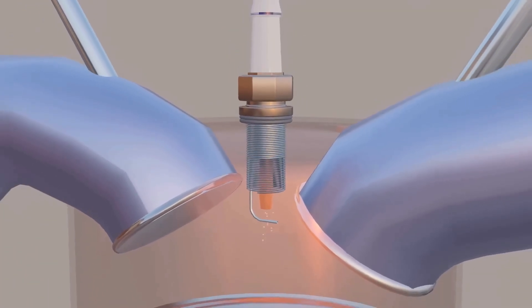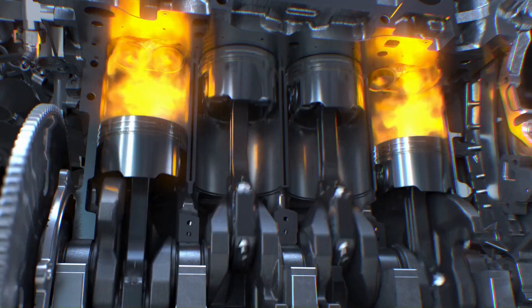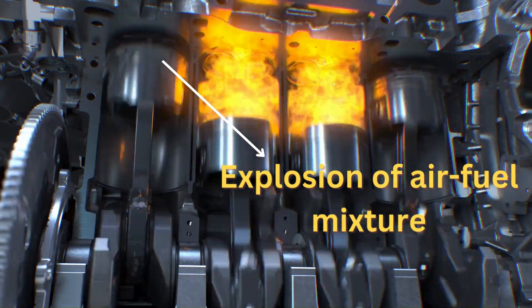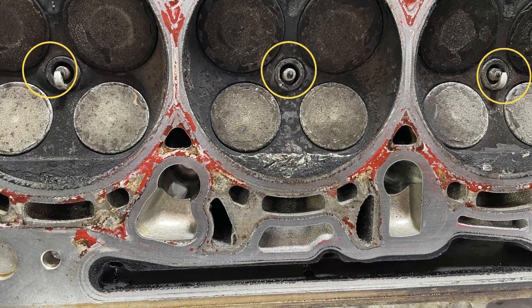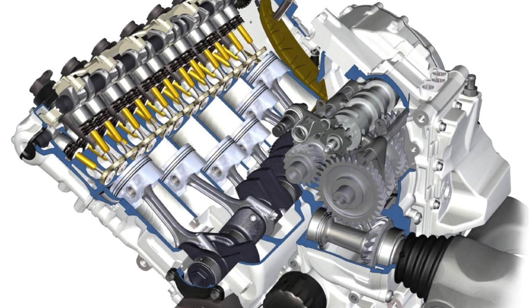A spark plug ignites the compressed air-fuel mixture in your engine's cylinders. The ignition from the spark plug creates an explosion of air-fuel mixture inside the engine's cylinders which pushes the piston down and generates power. The engines have one spark plug per cylinder. So a 4-cylinder engine will have 4 plugs, a 6-cylinder will have 6 plugs, and so on.